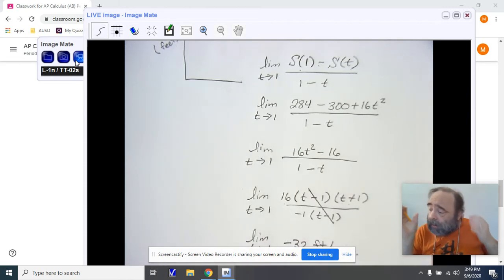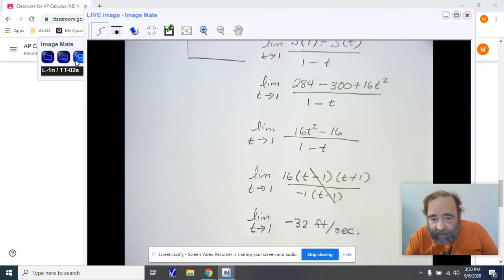So, right here, I have now found the rate at which my object is falling from that building at a height of 300 feet at one second. This is what is referred to as an instantaneous rate of change. It's very different from an average rate of change.